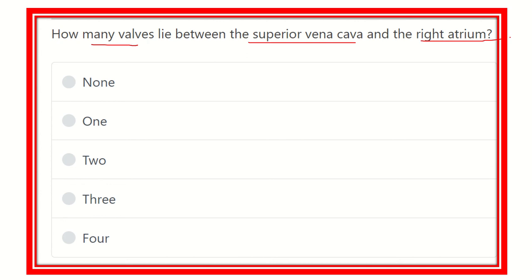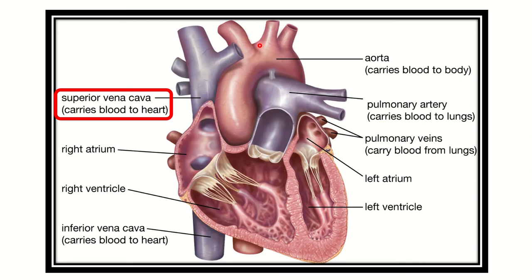We know the right atrium receives the superior vena cava, the inferior vena cava, and the coronary sinus. We have to find the valve located between the superior vena cava and the right atrium. The options are zero, one, two, three, and four. The superior vena cava lies in the upper aspect of the right atrium and drains blood from the head, neck, and upper limbs.